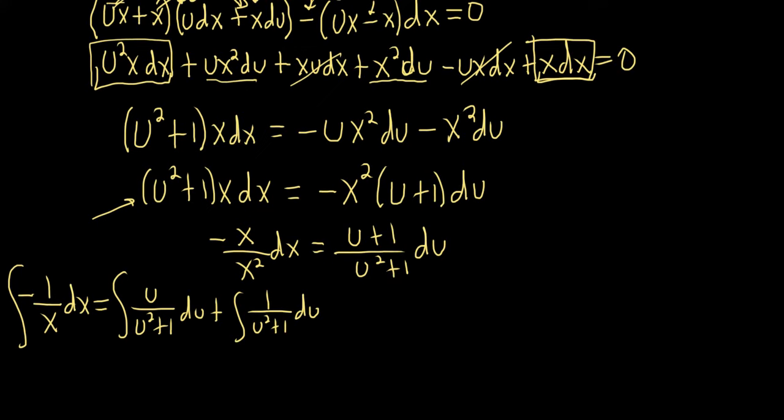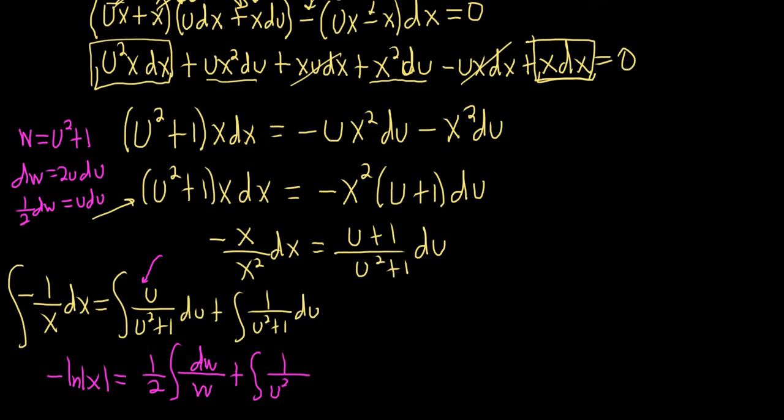So let's go ahead and make a substitution for the first one. I'll do it up here. We'll let w equal u²+1. And then dw will be 2udu. And so we don't have a 2 in the integral, so we divide by it. So we have ½dw equals udu. So this is going to be - I'm going to go ahead and integrate this one - negative ln|x| equals ½ integral. So the udu becomes ½dw, and we're left with a w on the bottom. Plus, and I'll leave this like this for a moment, (u²+1)².